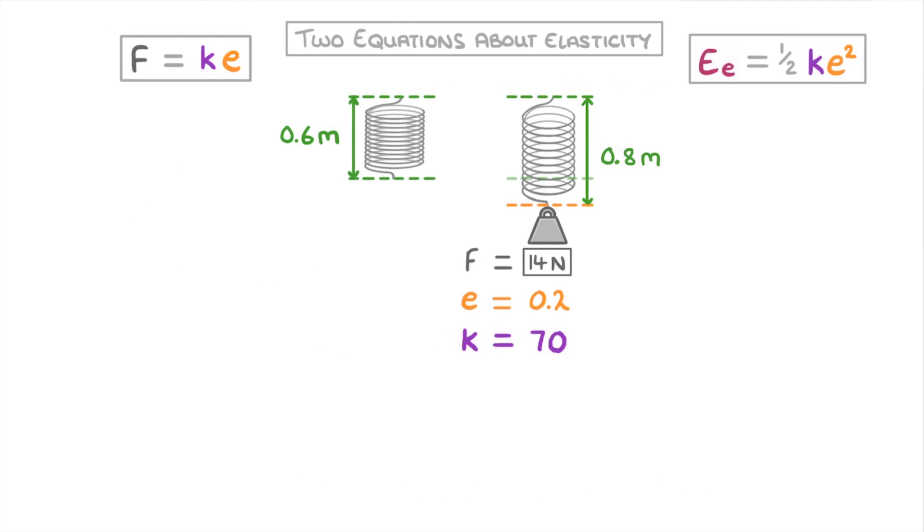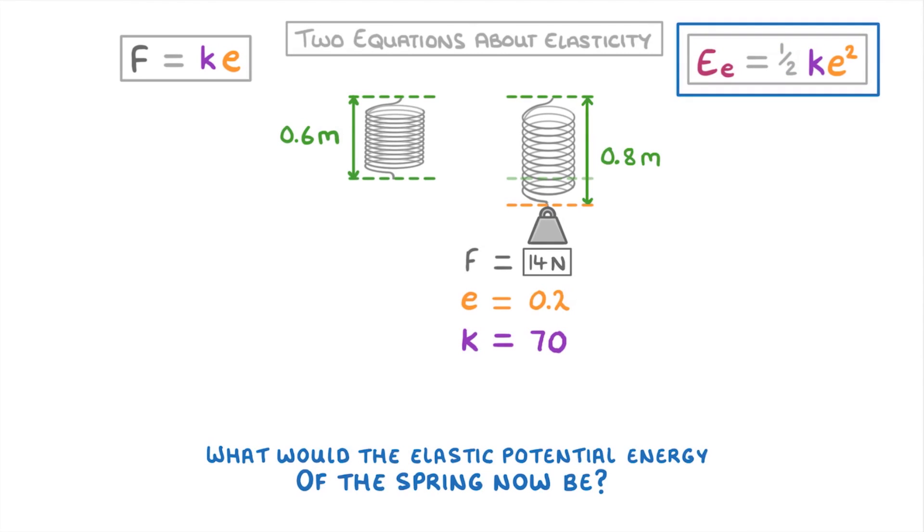Now, using the same scenario, what would the elastic potential energy of the spring now be? This time, we're going to have to use the other equation, so elastic potential energy equals half KE squared.